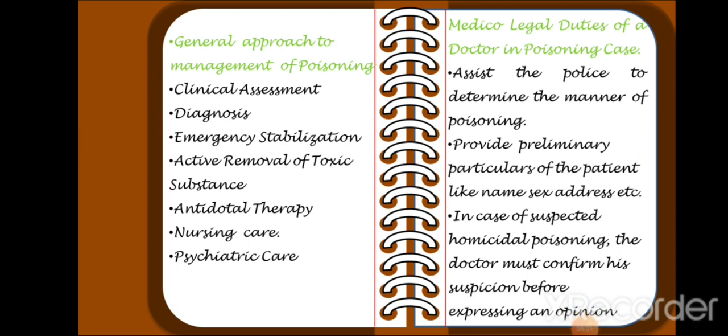Now, the second duty of a doctor is the medical legal duty. The first aim is to assist the police in determining the manner of poisoning. For this, the doctor should provide primary particulars of the patient — such as name, sex, address, occupation, date and time, brought by whom, and identification marks — along with the history of the patient to the police. In cases of suspected poisoning, the doctor must confirm their suspicion before expressing any opinion.